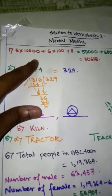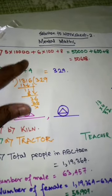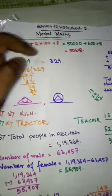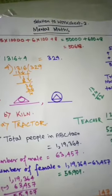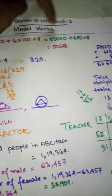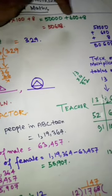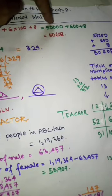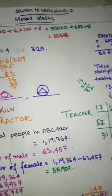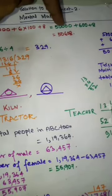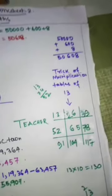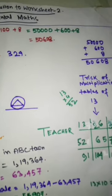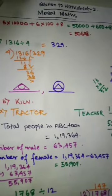The first question was given 5 multiplied by 10,000 plus 6 into 100 plus 8. Then what you do first, as you know you have to multiply them. After multiplying 5 and 10,000 you get 50,000, multiplying 6 and 100 you get 600, and multiplying 8. So on adding these numbers you get 50,608. This will be your answer for question number 1.